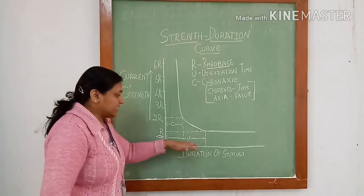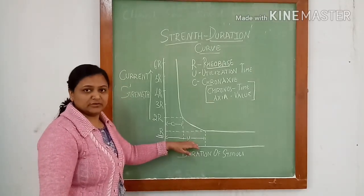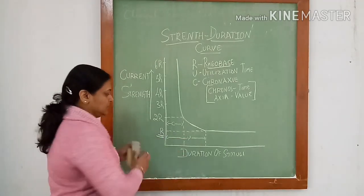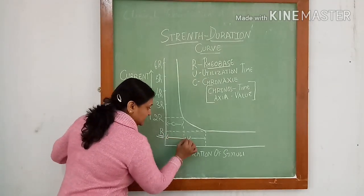And the time for which this rheobase current is given is known as utilization time. So this is utilization time.